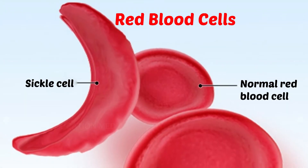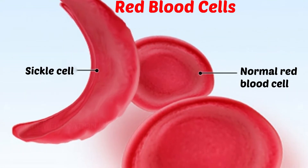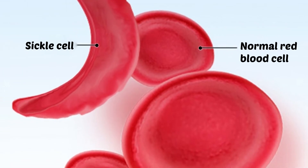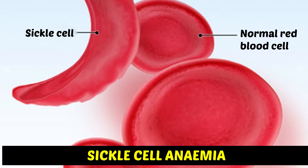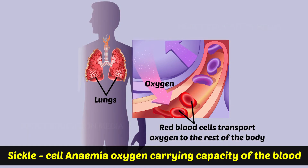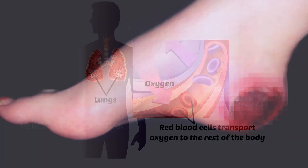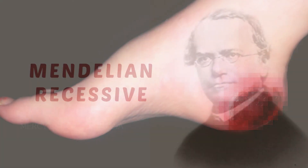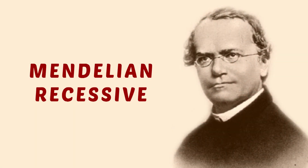A classical example of such polymorphism is the genetic disorder in humans, namely sickle cell anemia. This disease reduces the oxygen carrying capacity of the blood and affects the blood supply to various organs. This disorder is inherited as Mendelian recessive.